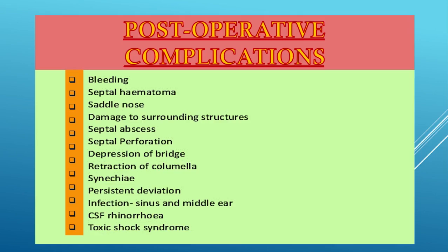Postoperative complications may also occur after septoplasty: bleeding, septal hematoma, saddle nose deformity depending on the amount of septal cartilage removed, and damage to surrounding structures. As in SMR, complications include septal abscess, septal perforation, depression of the nasal bridge, retraction of the columella, synechiae, persistent deviation, sinus and middle ear infections, CSF rhinorrhea, and toxic shock syndrome. These can all occur in cases of septoplasty.